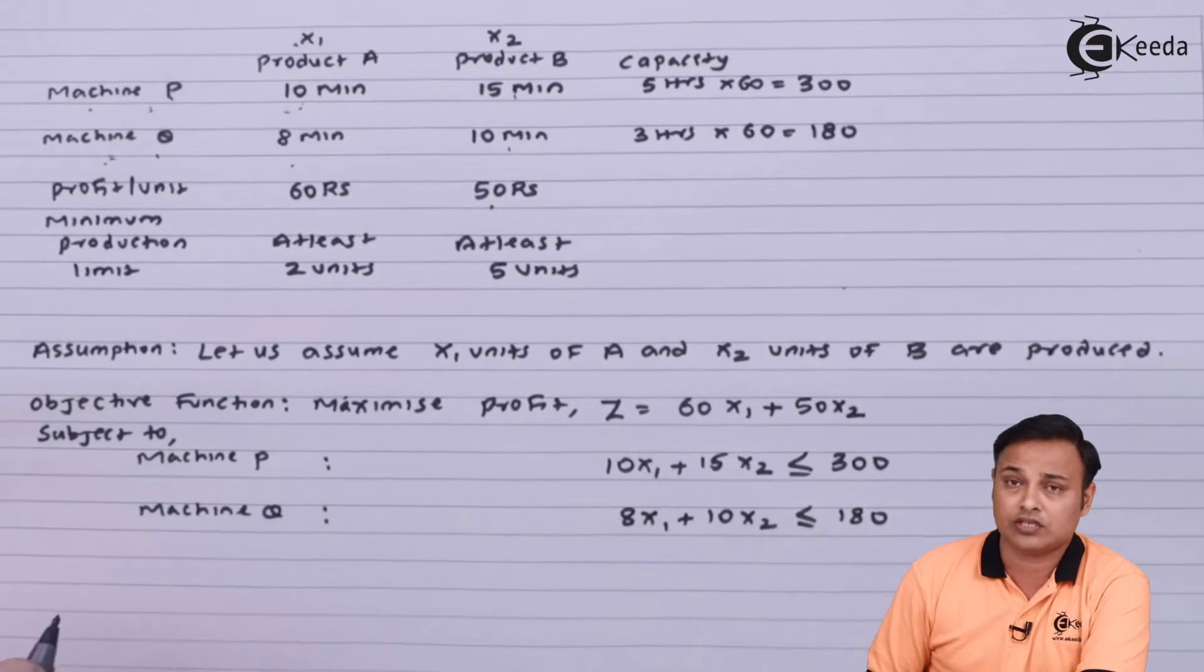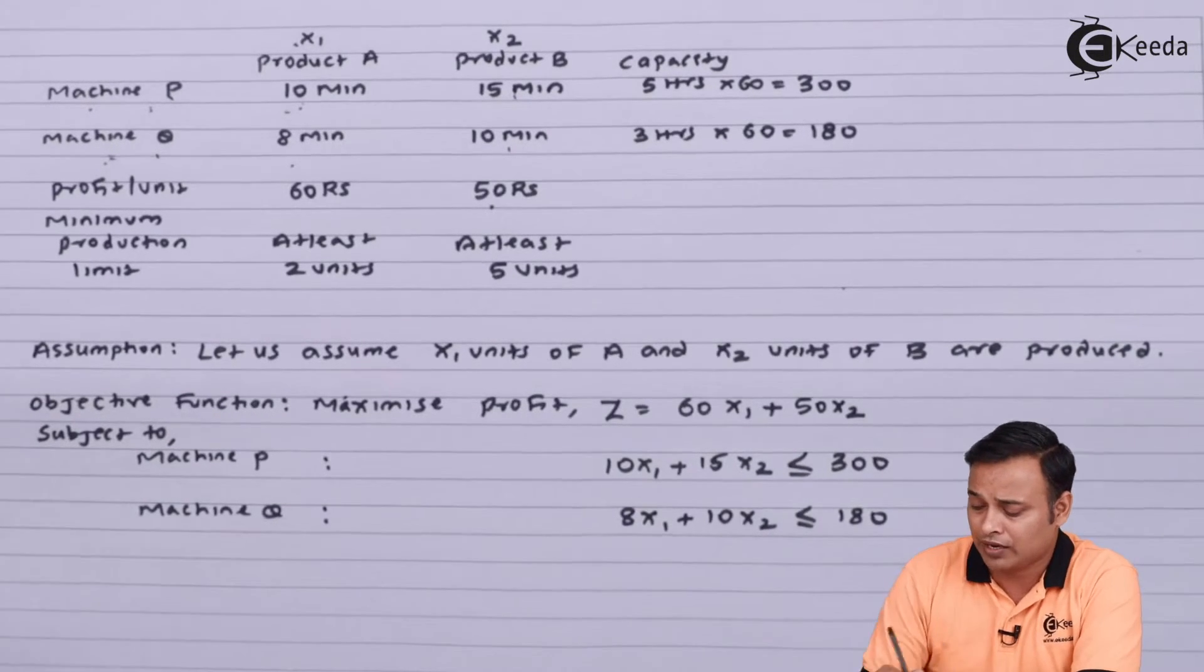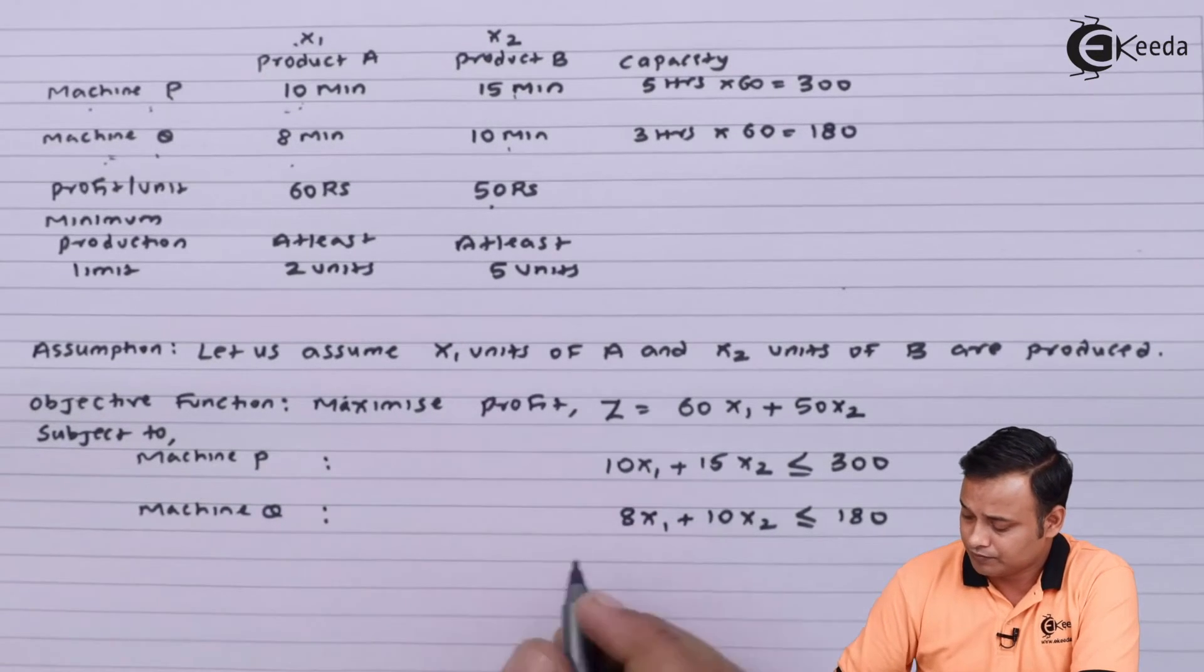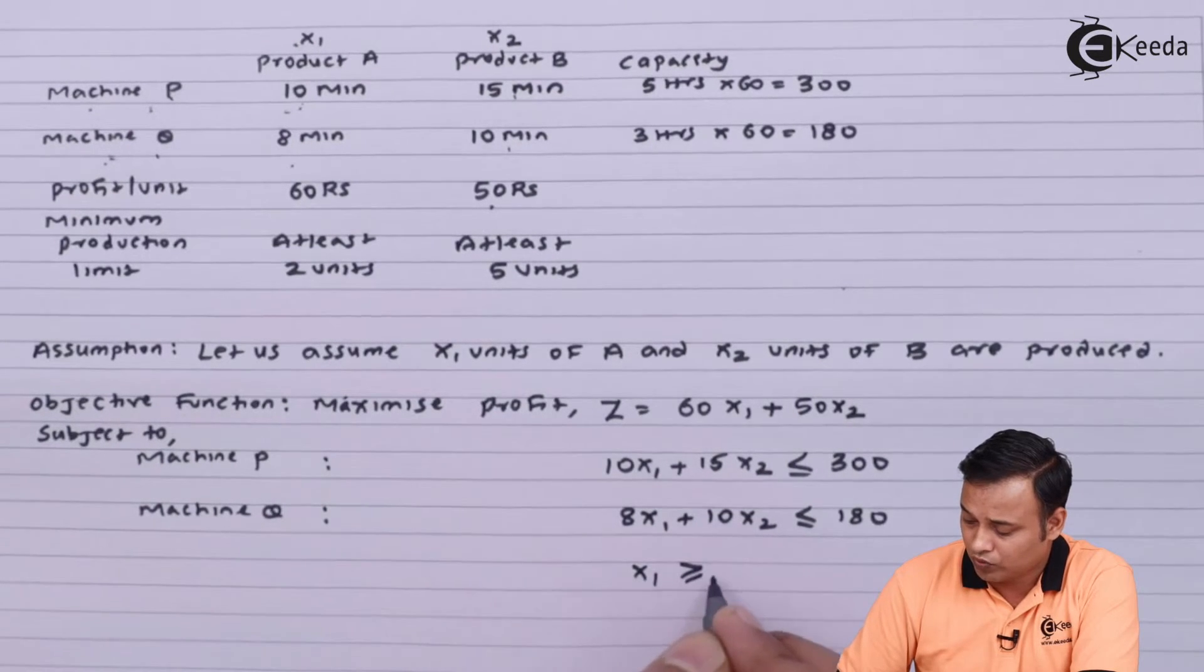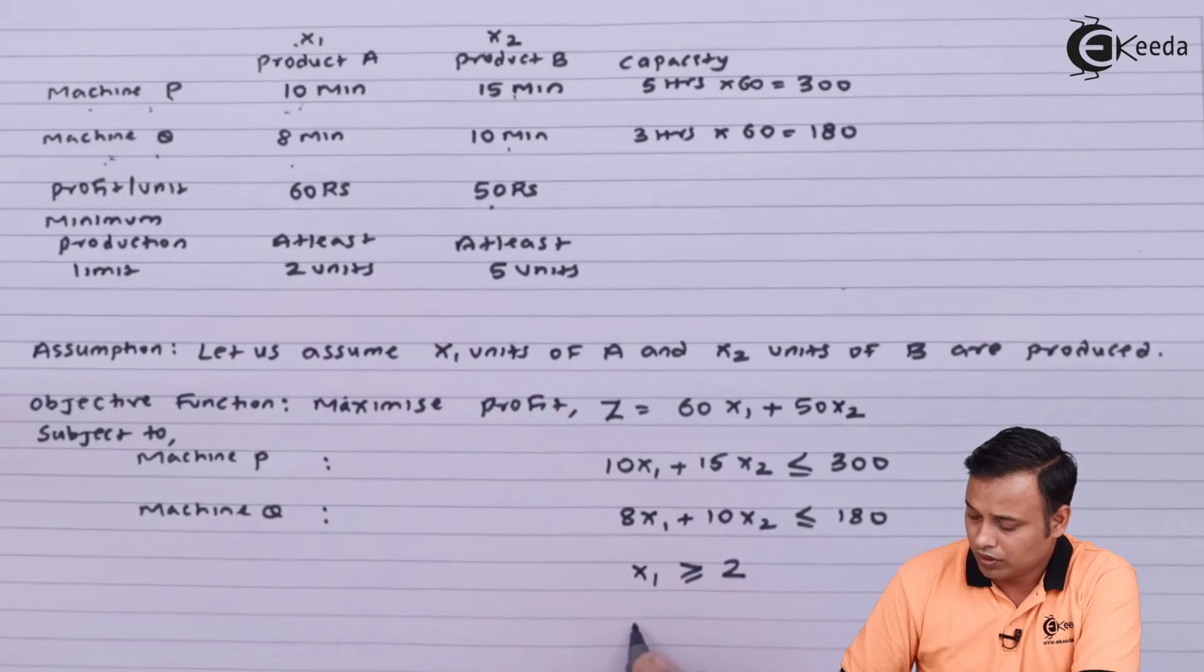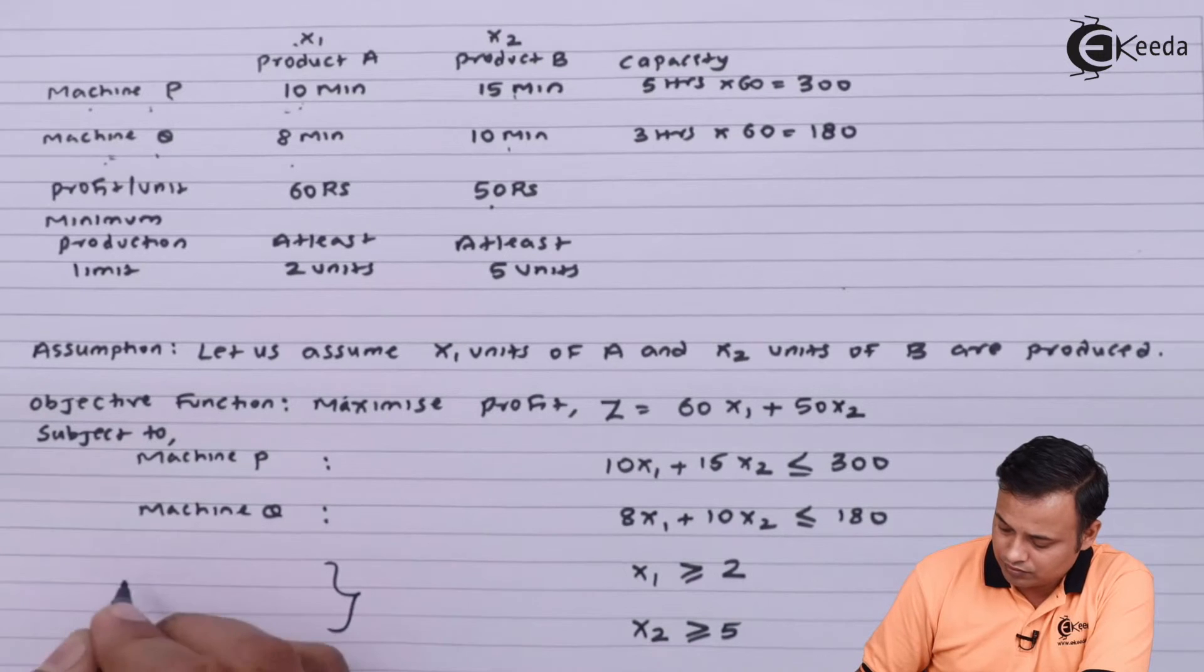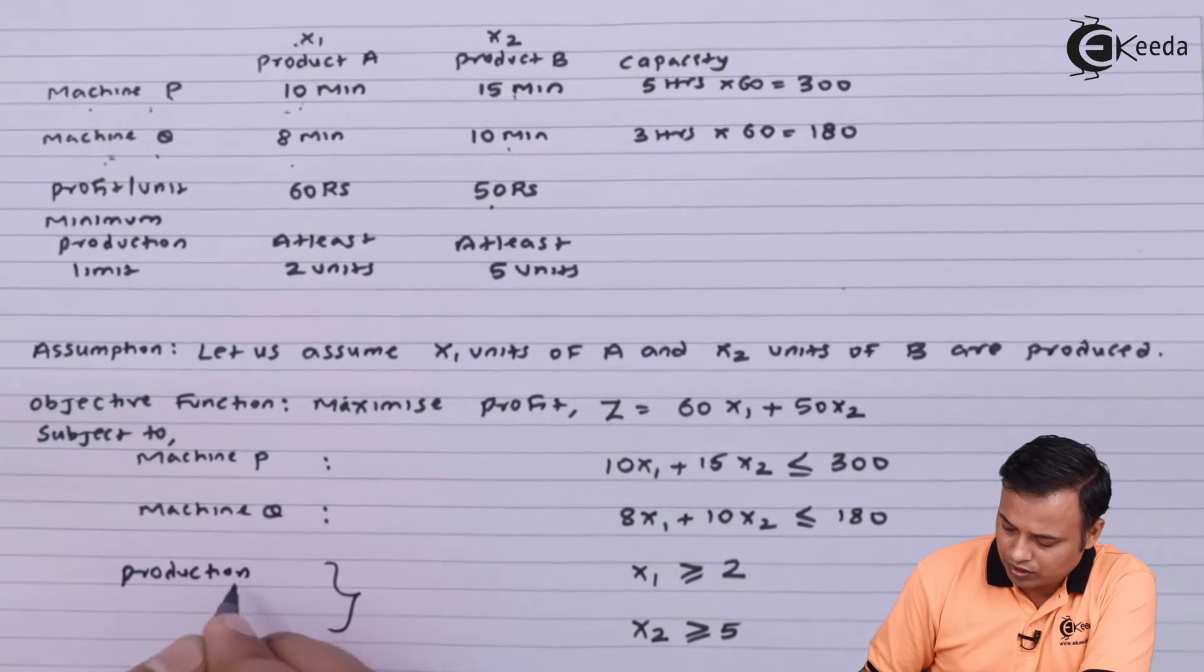And last but not the least, I also have the production constraint that I must produce at least 2 units of A and at least 5 units of B. So it will be x1 more than equal to 2 and x2 more than equal to 5. These are my production constraints.